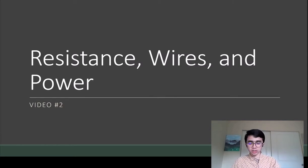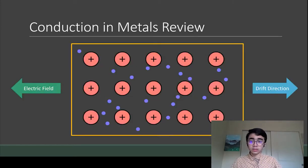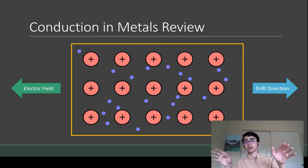Last video I covered how conduction works in metals. Quick review: if you have a piece of copper wire, we have a lattice of copper atoms and the outer electrons of those copper atoms are free to move around in this free sea of electrons.